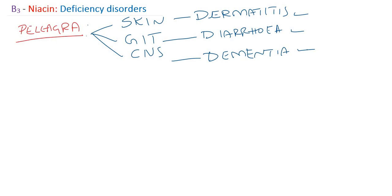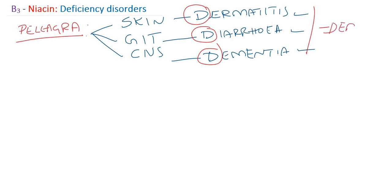So the features of pellagra are the 3Ds: Diarrhea, Dermatitis, and Dementia. If not treated, it will lead to a 4th D — Death.